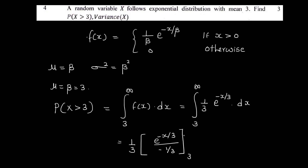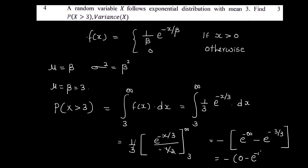Evaluating from 3 to infinity: we get e raised to minus infinity minus e raised to minus 3 by 3. That is equal to 0 minus e raised to minus 1, which gives the final answer e raised to minus 1.